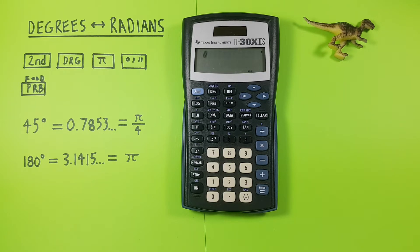For example if we're given 45 degrees and want that in radians, first thing we have to do is set our calculator to the mode we want our results in. So since we have 45 degrees and want our result in radians, we need our calculator set to radians.